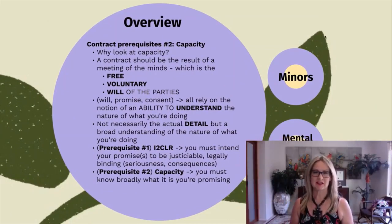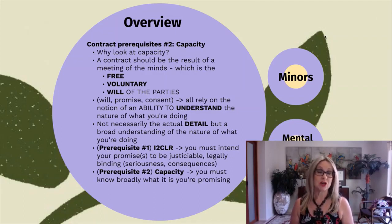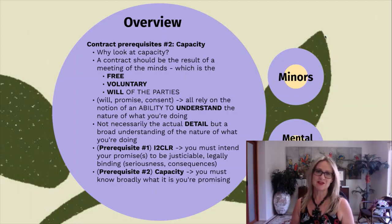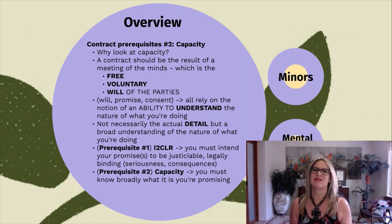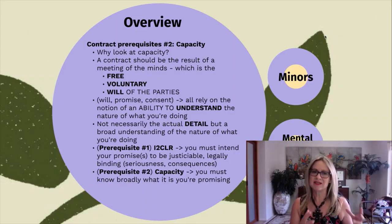Why on earth look at capacity to contract? If you think back to week one when we had a look at theory — and yes, I'll be referring back to that at odd times throughout the term — we learned that a contract needs to be the result of a meeting of the minds, in that it has to be the free voluntary will of the parties. We looked at will theory, promise theory, consent theory.